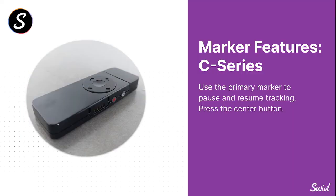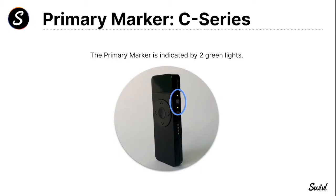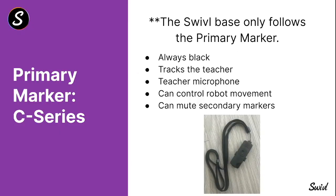Use the primary marker to pause and resume tracking on the robot. If you don't need the robot to track you, tap the center button once to pause tracking; tap it again to resume. The primary marker on the C series is indicated by two green LED lights, one above and one below the power icon. The Swivel base only follows the primary marker — it's always black, tracks the teacher, has the teacher microphone built in, can control robot movements, and can mute secondary markers.